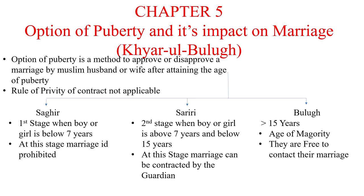We can compare this with the adolescent age. The second stage is Sariri, where the child is above seven and below fifteen years. This is known as Sariri, and at this stage, marriage can be contracted by the guardian.